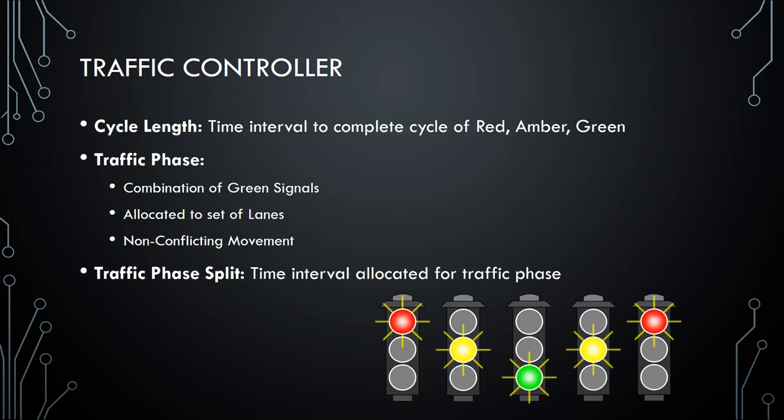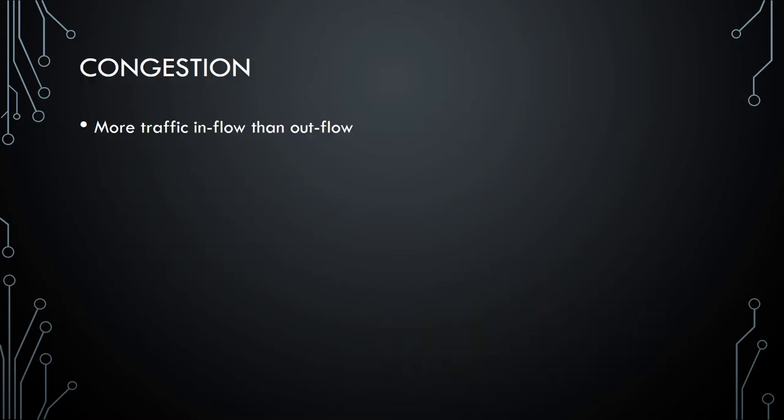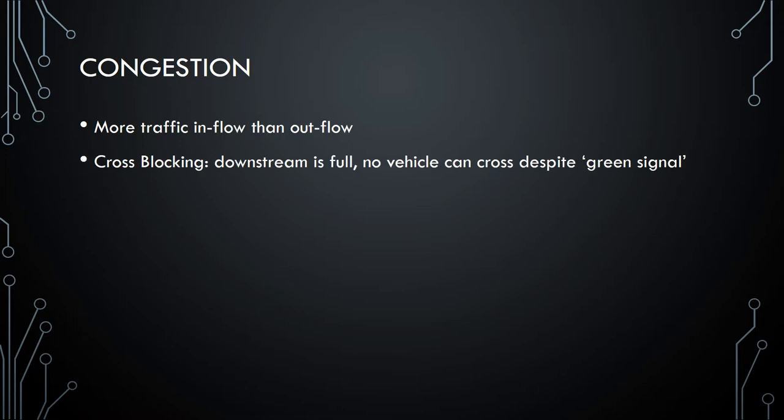A traffic phase split is the time interval allocated for the traffic phase to change from one to another. Congestion happens when traffic inflow to a certain intersection is more than the outflow. Cross blocking is when the downstream is full and no vehicle can cross despite having a green signal.